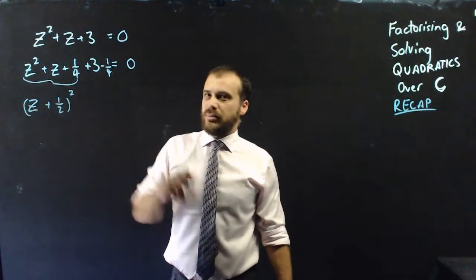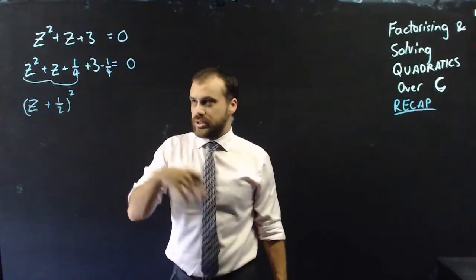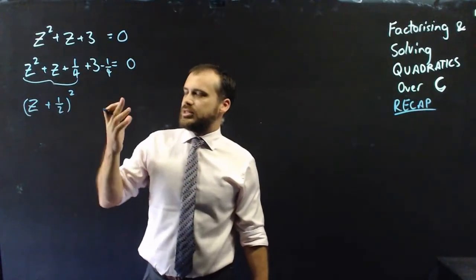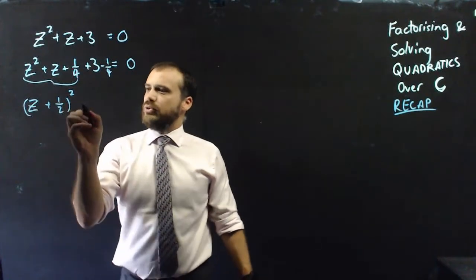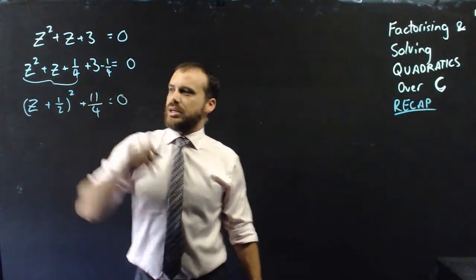And then 3 minus a quarter, do a little bit of fraction stuff, either by writing it down or doing it in your head. That's going to be 11/4. And that's going to equal 0.